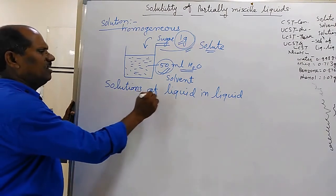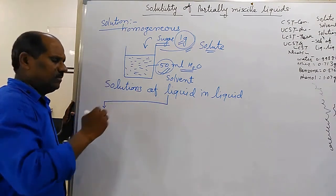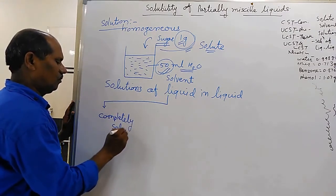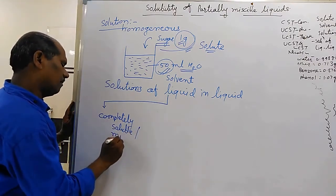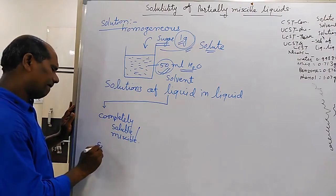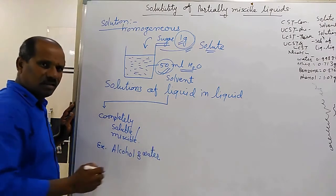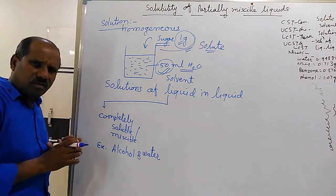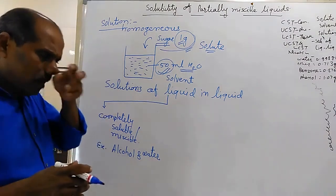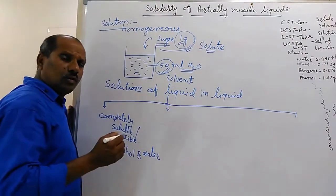In liquid-in-liquid solutions, there are also subtypes. The first type is liquids which are completely soluble or miscible — liquids which are completely miscible and form a homogeneous part. The second type is liquids which are partially miscible.